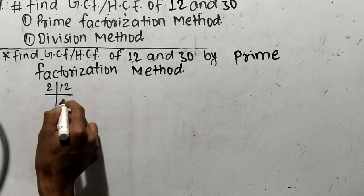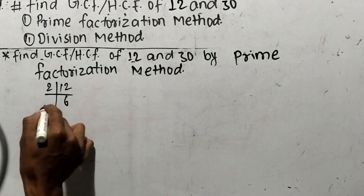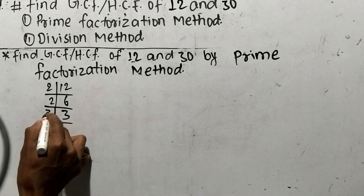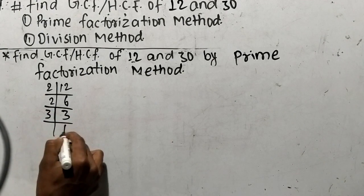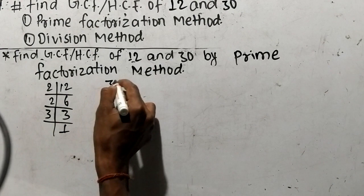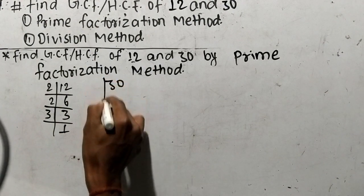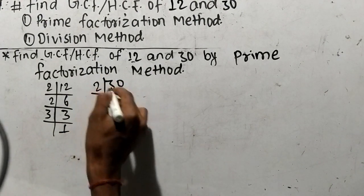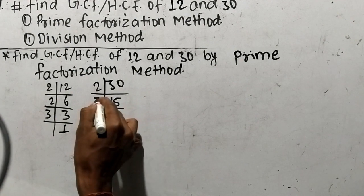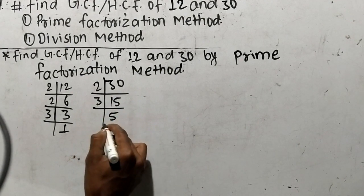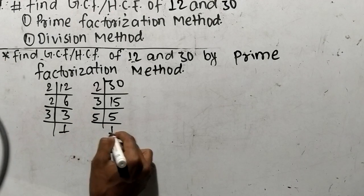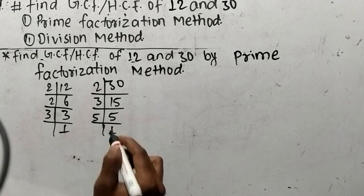For 12: it is 2 times 6 means 12, and 2 times 3 means 6, and 3 times 1 means 3. In the same way, we shall find out the prime factors of 30. It is 2 times 15 means 30, and 3 times 5 means 15, and 5 times 1 means 5.